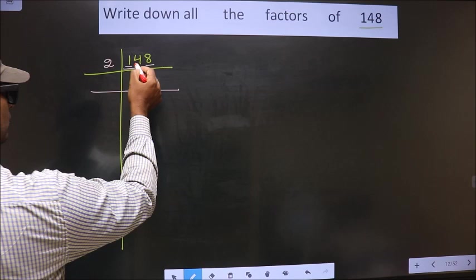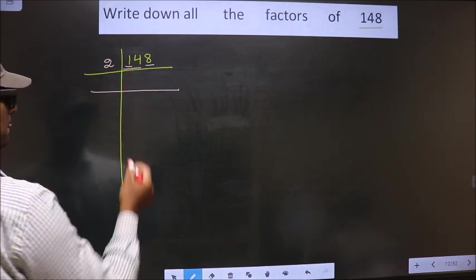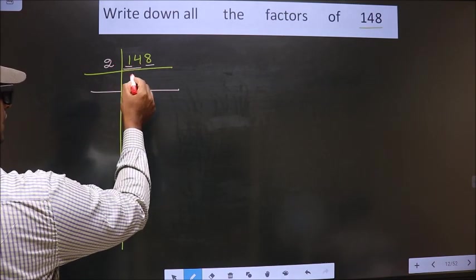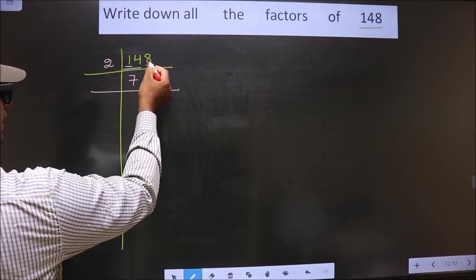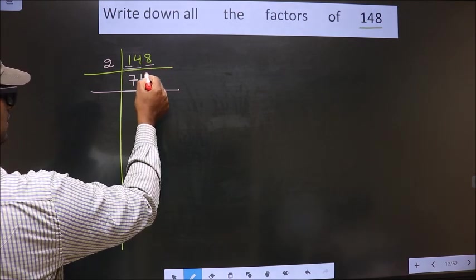So we take 2 numbers, that is 14. When do we get 14 in 2 table? 2 times 7 is 14. Next number is 8. When do we get 8 in 2 table? 2 times 4 is 8.